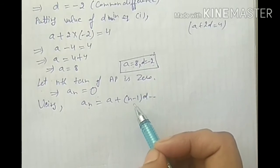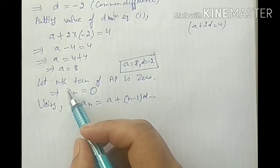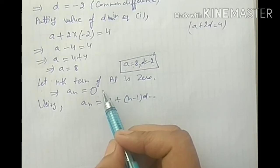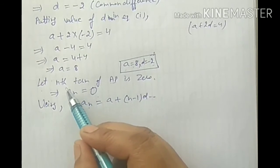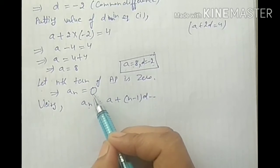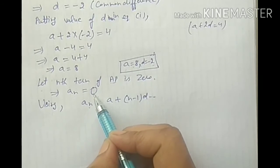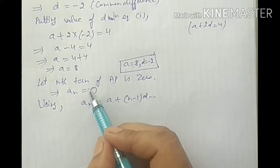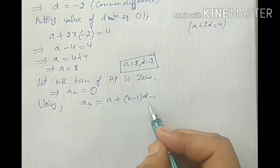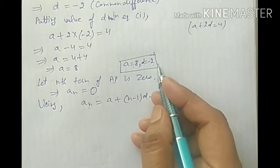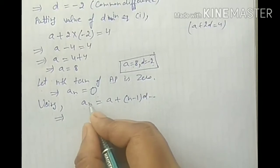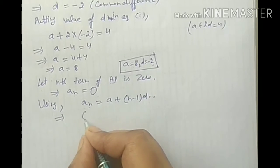But finally हमें find out करना है कि AP की कौन सी term 0 है। So हमने मान लिया nth term 0 है - AN equals 0. Again हम इस formula का use करेंगे और A और D की value use करेंगे। So we get AN = 0.